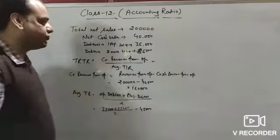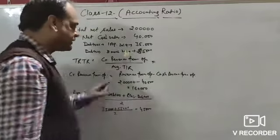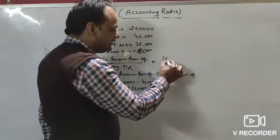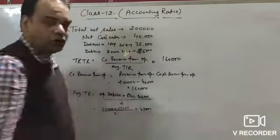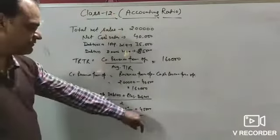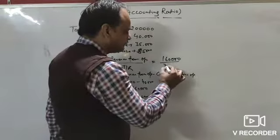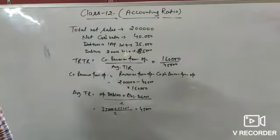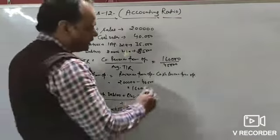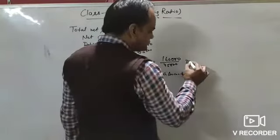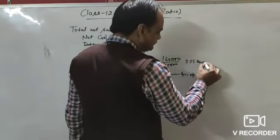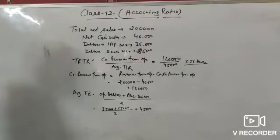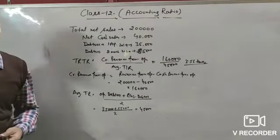Now putting values in the formula: credit revenue from operation ₹1,60,000 divided by average trade receivable ₹45,000 = 3.56 times. The trade receivable turnover ratio is 3.56 times.